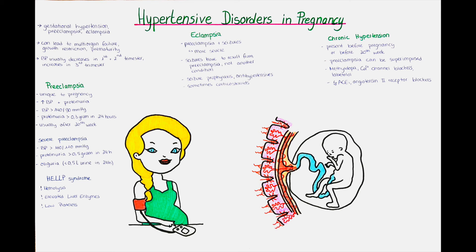Now we will talk about eclampsia and how it differs from pre-eclampsia. Generally, eclampsia is more severe. A patient with eclampsia will also have high blood pressure and elevated proteins in the urine, but additionally the patient has seizures. Those seizures are of tonic-clonic type, with times of repetitive contraction and stiffening of the muscles, particularly of the arms and legs. It is important to make the differential diagnosis to other disorders that can cause seizures, as in eclampsia the seizure must result from the pre-eclampsia. Eclampsia usually starts after the 20th week of pregnancy and most often occurs close to term, at around 37 weeks.